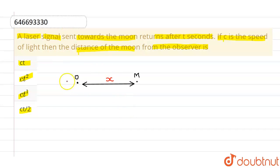Now, since the laser signal is sent from point O, it goes to point M which is moon and then returns again to O. So distance travelled by it is 2x. Distance travelled by laser light is 2x.